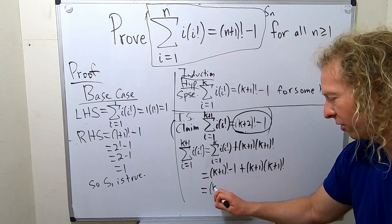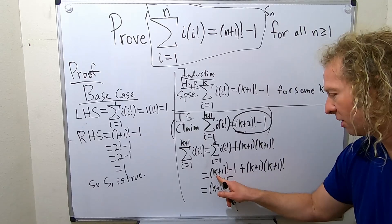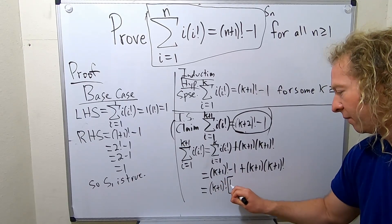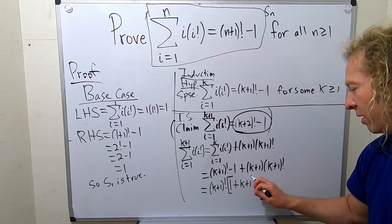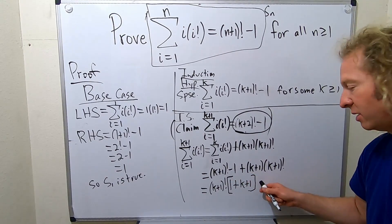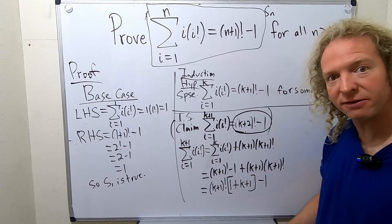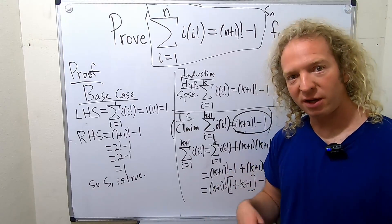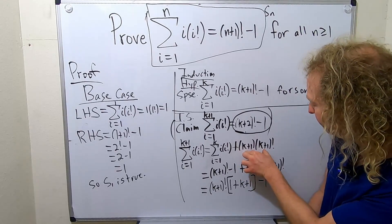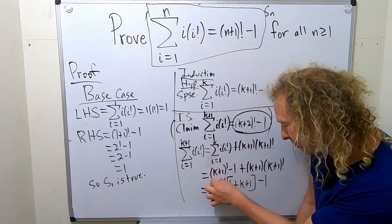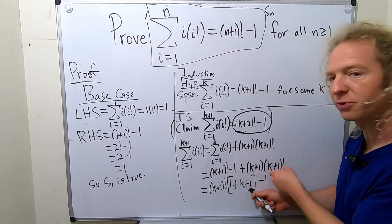So I'm going to factor out k plus 1 factorial. Using a bracket for clarity — this gives us k plus 1 factorial times the quantity 1 plus k plus 1, and then minus 1 out here. Going really slow to make sure this is right. I haven't gone through all the details of this problem on purpose, because it's better to show you how to do a problem as I figure it out — that's how you learn and become good.